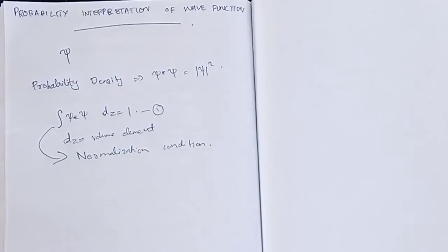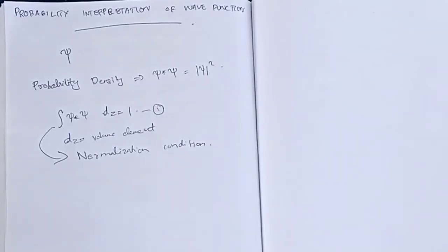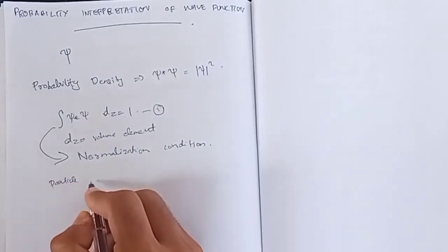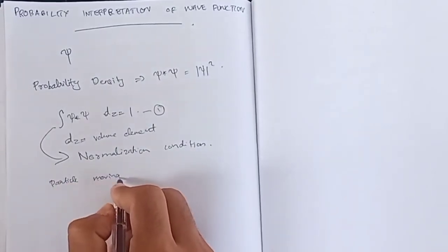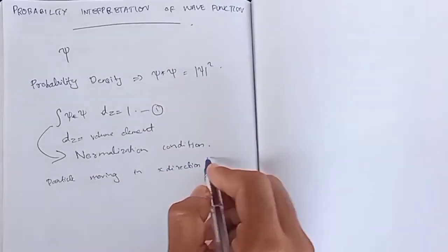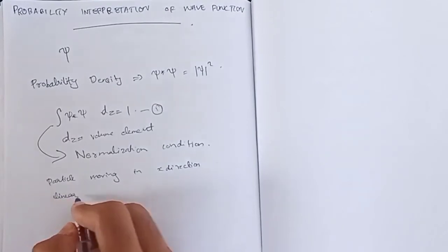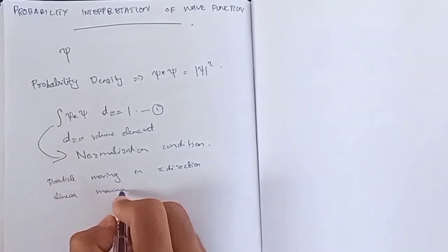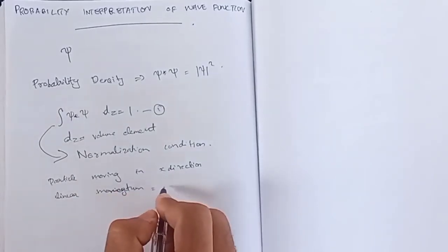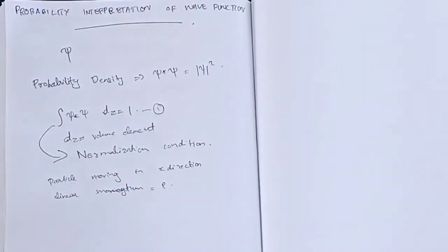This is the statistical interpretation and the normalization condition. Now we consider a particle. That particle is moving in the x-direction, and its linear momentum is p.